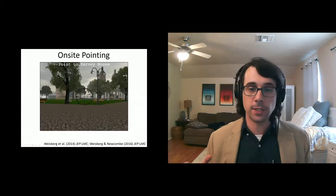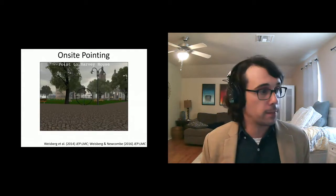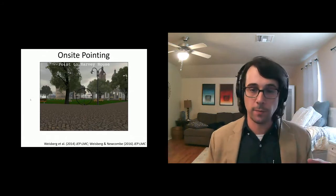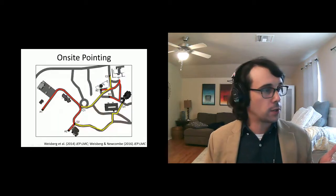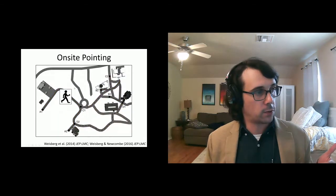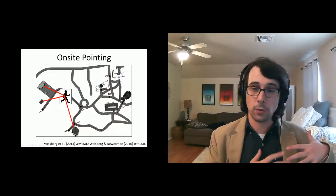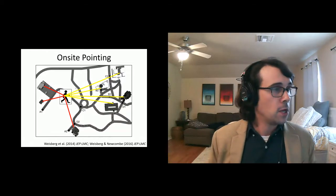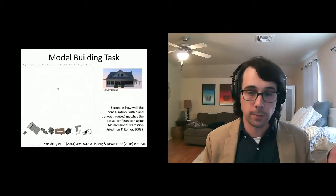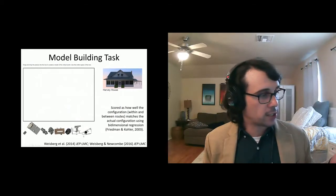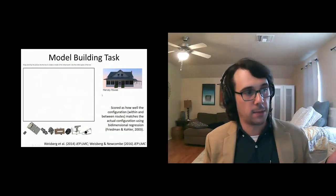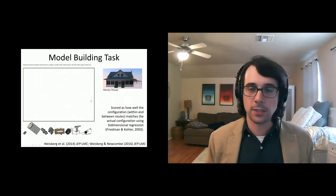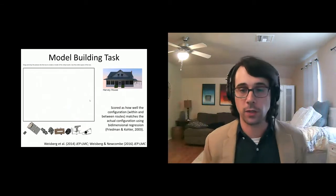So after learning, participants complete two tasks designed to measure how accurately they had learned the environment. The first, an on-site pointing task. In this task, participants have to point a crosshair toward each of the buildings that they learned from each of the buildings that they learned. So in other words, a participant might be dropped here along one of the main routes. They'd have to point to all the buildings within that route, but also all of the buildings that were on the other main route that they had learned. We also had participants construct a map, which we call a model building task. In this task, participants had to drag and drop these buildings that appeared at the bottom, which we would tell them the name and show them what the building looked like, and build basically a map of the virtual environment. We scored that based on how accurately the configuration matched the actual configuration of the route.